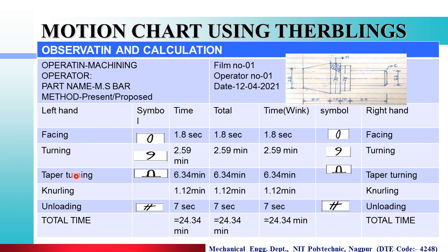Again: Facing, Turning, Taper Turning, and Knurling. तो अभी इसको Move करने के बाद यहाँ पर Facing होंगा, then Turning होंगा, then Taper Turning होंगा, and then Knurling होंगा. मतलब आपको Inspection करना पड़ेंगा, then Position करना पड़ेंगा Tool or Workpiece को, and then Hold करके रखना पड़ेंगा. तो यह दोनों hands के लिए जो समय लग रहा है that is shown here. In this way we can calculate the operation time.